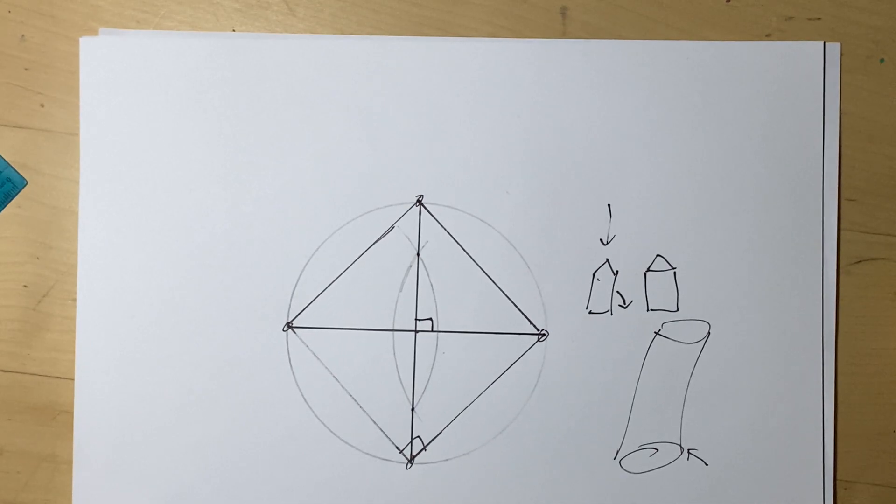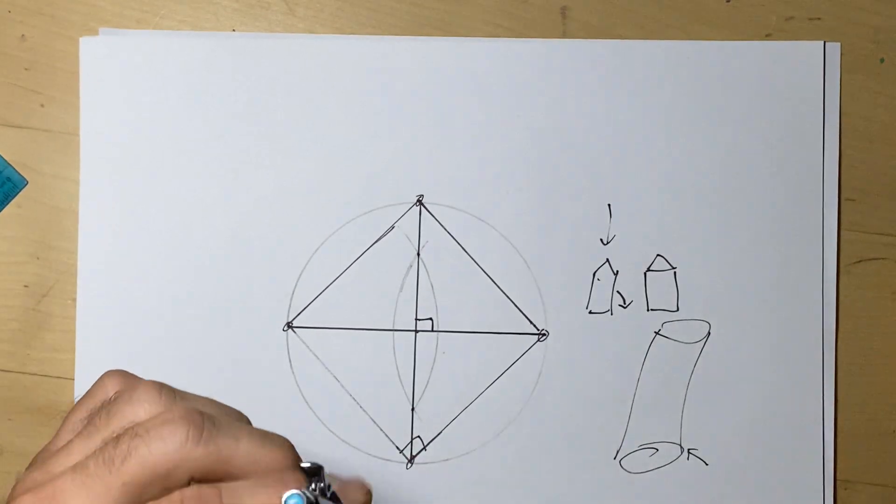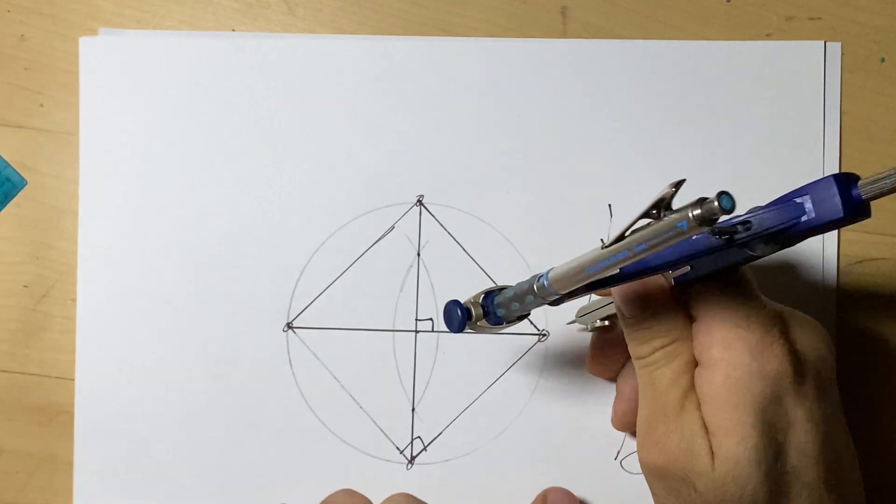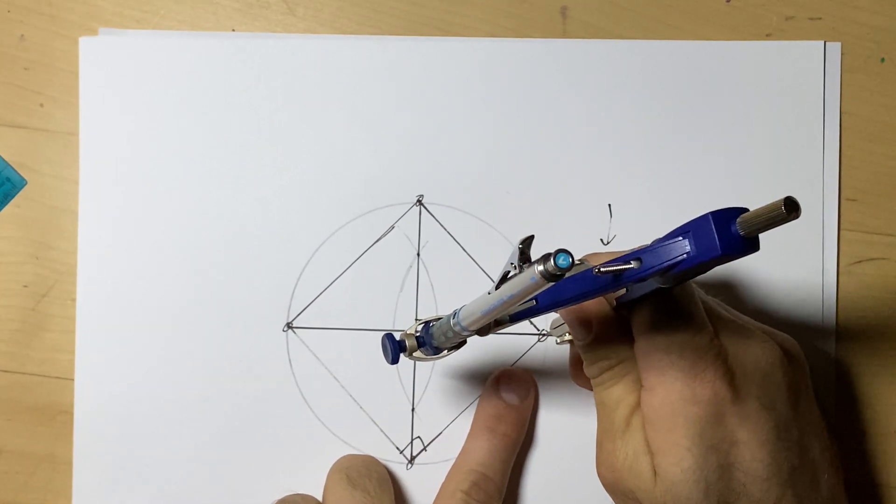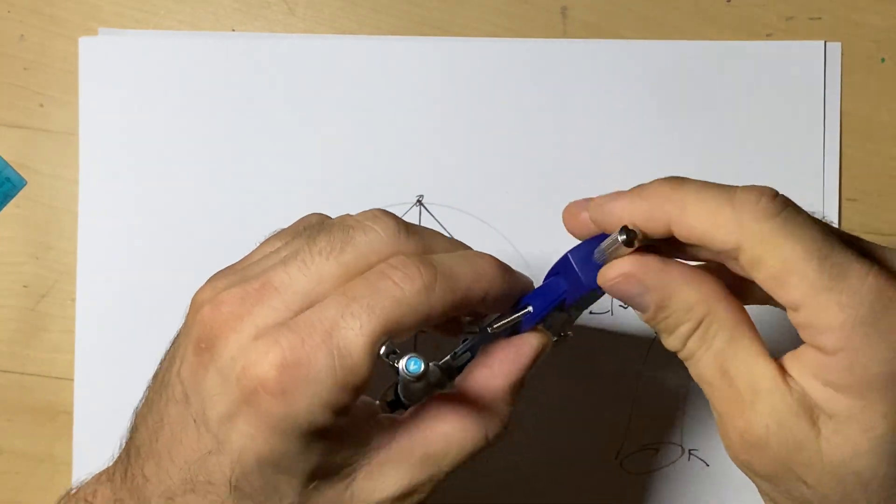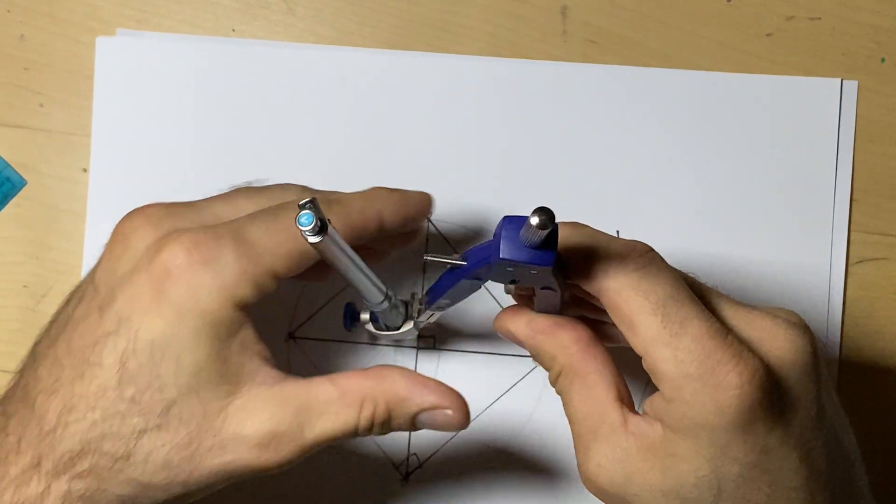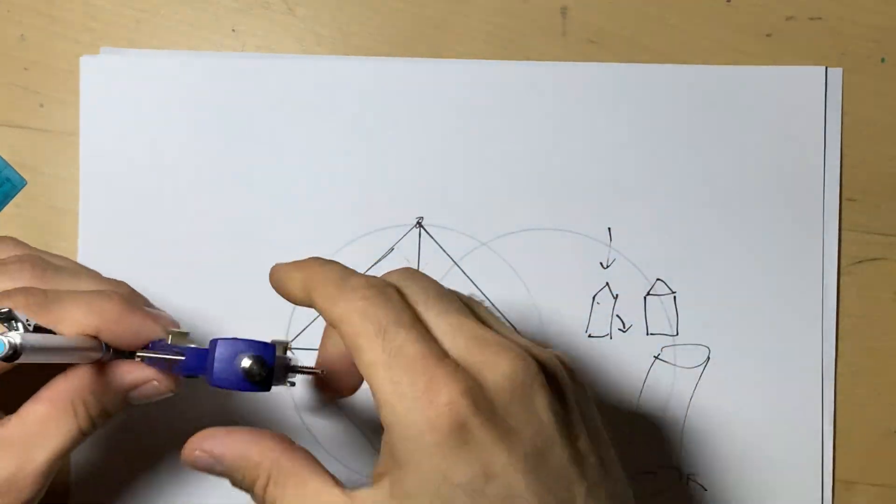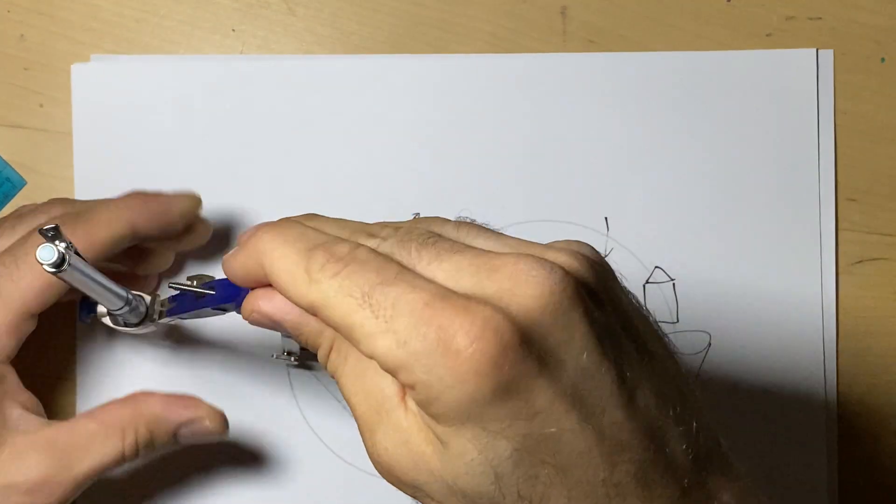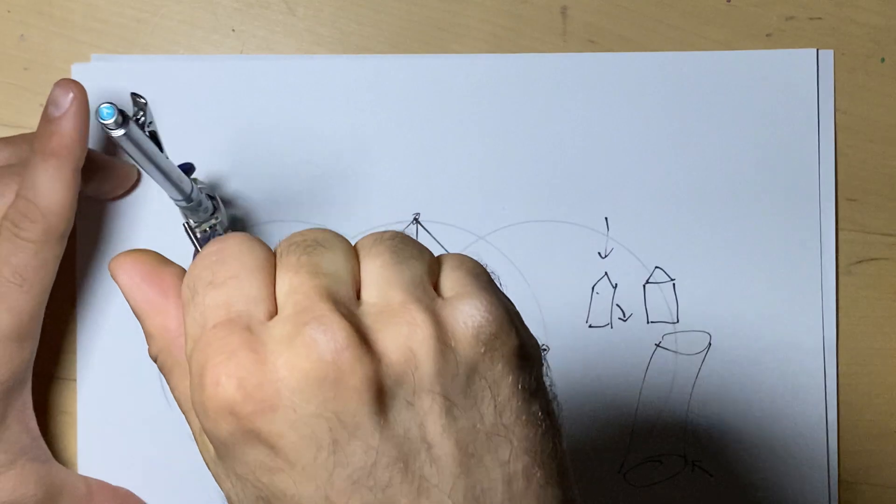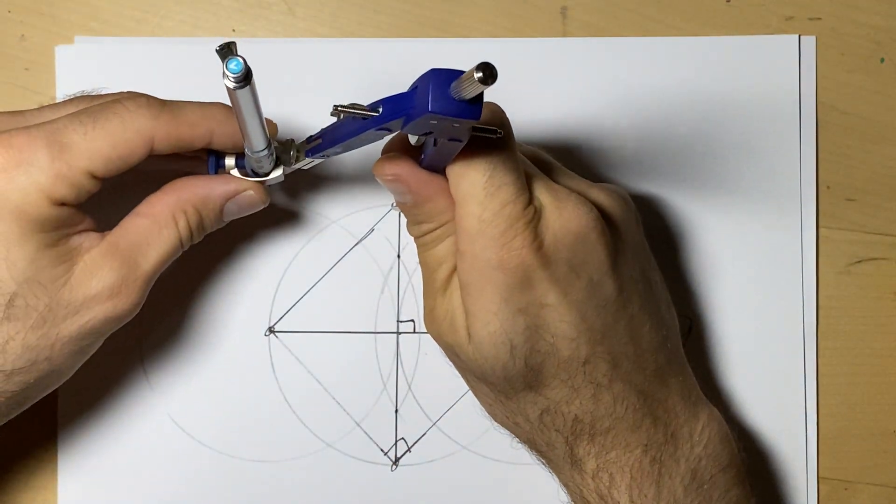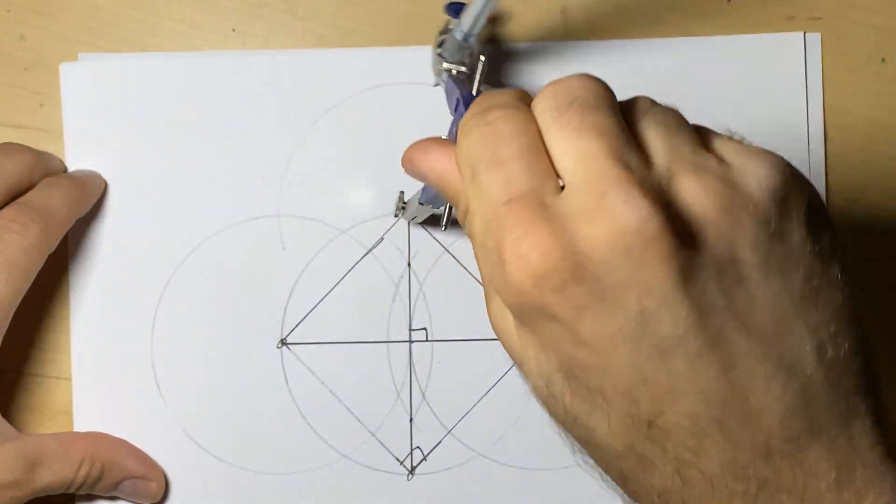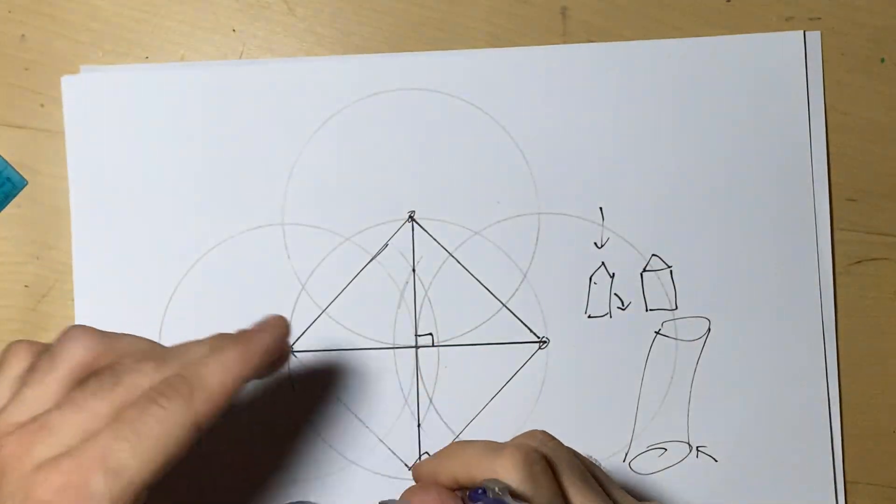One thing I mentioned: we can now begin to use this to make other shapes. This will be another video, but I can take this original circle, realign it, and draw a circle here. I can go to the other side and draw a circle there, go to the top and draw a circle there, and go to the bottom and draw a circle there.